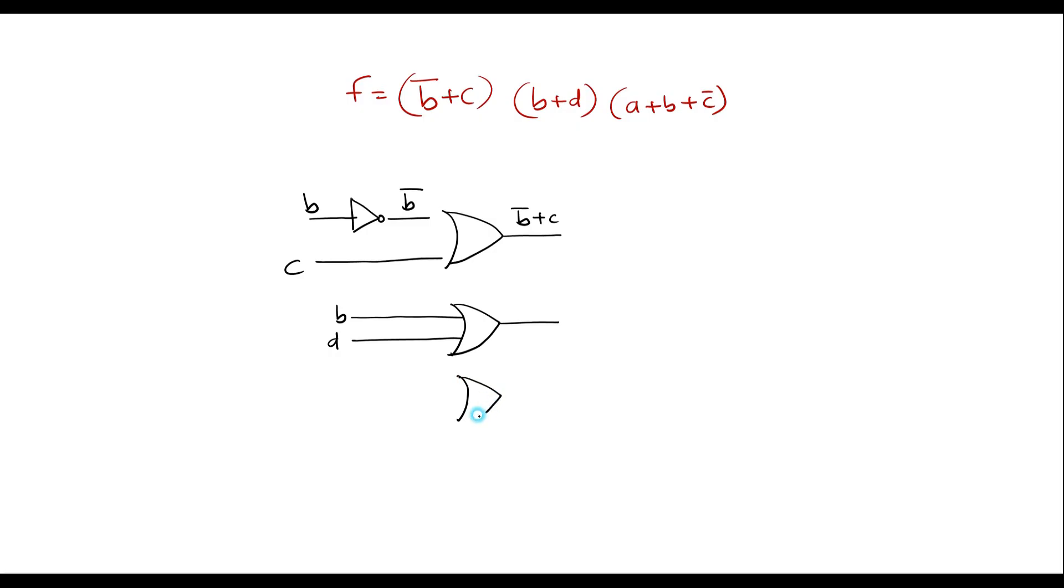We need one more OR gate. The inputs are a, b and we have c bar. So I need one inverter. Output of this is c bar is given to OR gate. The output of this will be a plus b plus c bar is given to AND gate.